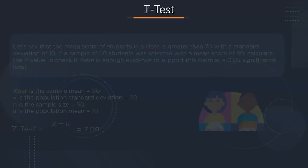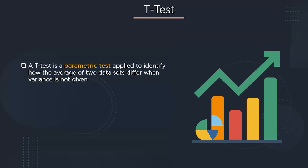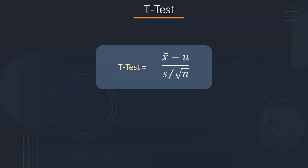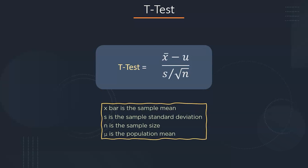Now, let's move on to T-test. A T-test in statistics is a method of testing a hypothesis about the mean of a small sample drawn from a normally distributed population when the population standard deviation is not known. In this case, the data is continuous. The formula to calculate the T-value is: T = (x̄ − μ) / (s / √n), where x̄ is the sample mean, s is the sample standard deviation, n is the sample size, and μ is the population mean.